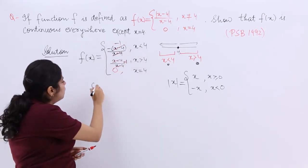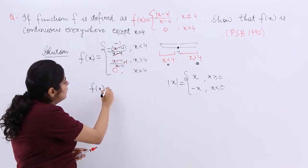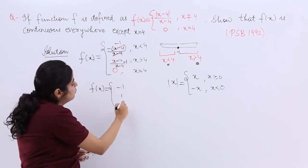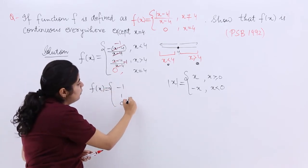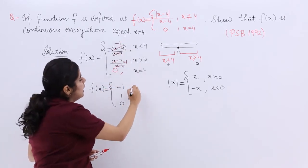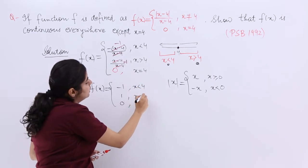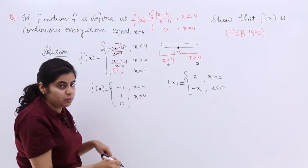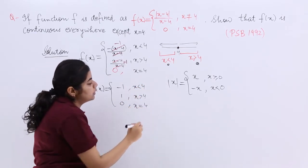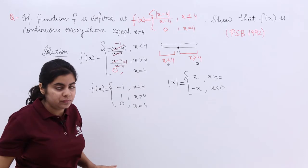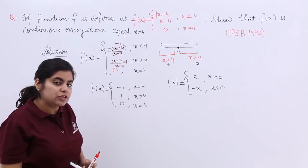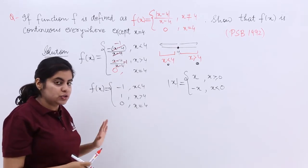So the simplified function is: f(x) = -1 when x is less than 4, f(x) = 1 when x is greater than 4, and f(x) = 0 when x is equal to 4. Now let's move back to the question after we have understood this.